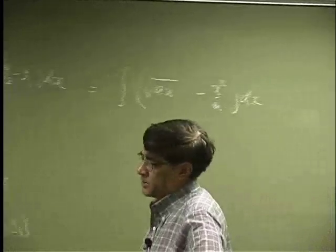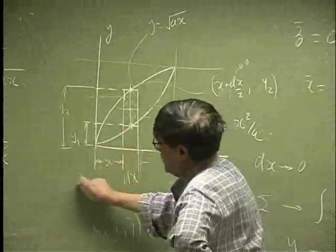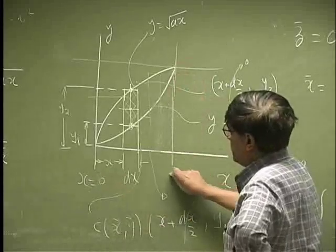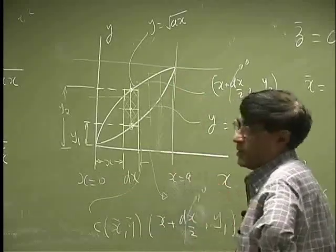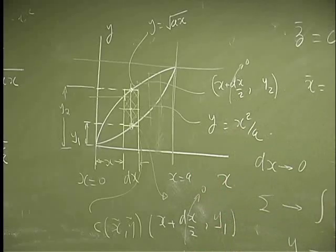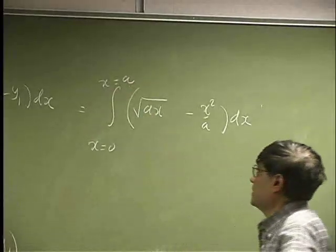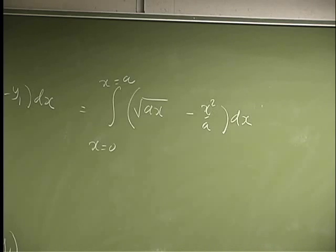Now we need the limits. To find the limits, we're going to go from here, this is 0, and we go all the way up to here. That's a. So for this integration, we have to go from 0 up to a. So that's the final form of the integration for finding the area.